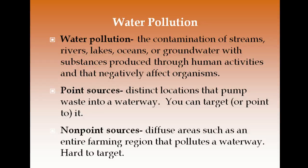A point source means I can actually point to and identify the specific polluter — it could be a particular factory that empties into the water, or a specific animal manure area. A non-point source means it's a very diffuse or large area that's hard to point to, or a series of places contributing pollution — like an entire farming region or a region of factories where you can't narrow down exactly where the source is.